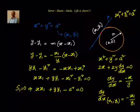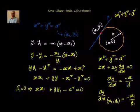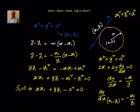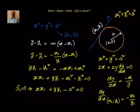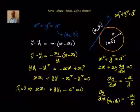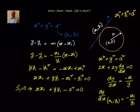Let us recap. We had to find the equation of the tangent to the circle x² + y² = a² at a particular point (x1, y1). We know that slope = m = tan θ = dy/dx. So we differentiated with respect to x and got 2x + 2y·(dy/dx) = 0, giving dy/dx = −x/y.